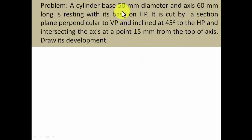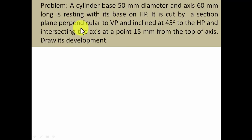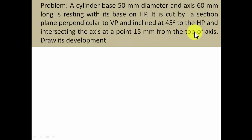A cylinder base 50 mm diameter and axis 60 mm long is resting with its base on HP. It is cut by a section plane perpendicular to VP and inclined at 45 degrees to HP and intersecting the axis at a point 15 mm from the top of it. Draw its development.